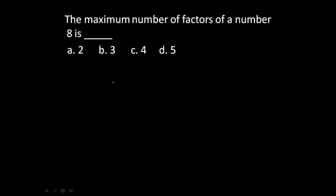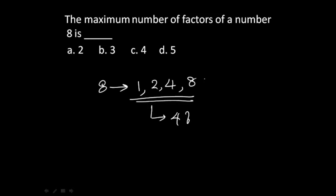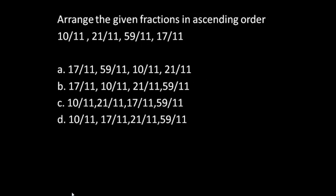Next question: The maximum number of factors of 8 — the factors of 8 are 1, 2, 4, and 8, so there are 4 factors. Correct answer is option C: 4. Next, arrange the given fractions in ascending order (smallest to biggest). Since all fractions have the same denominator of 11, just compare numerators. The correct answer is option B: 10/11, 17/11, 21/11, 59/11. A very easy mark-scoring question.